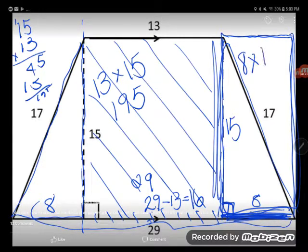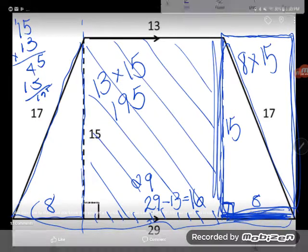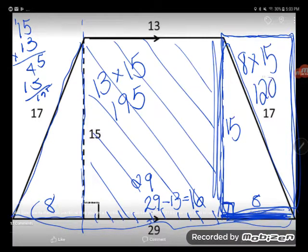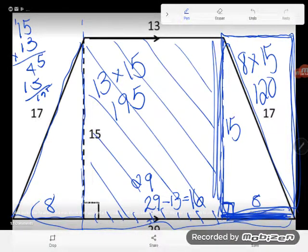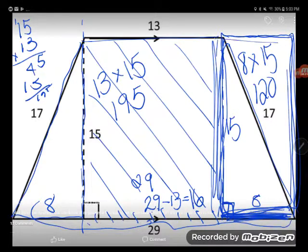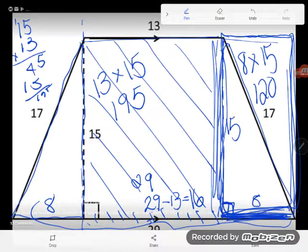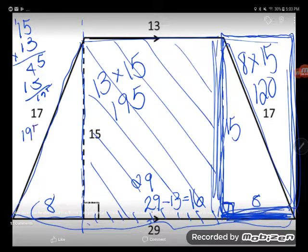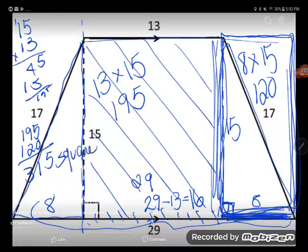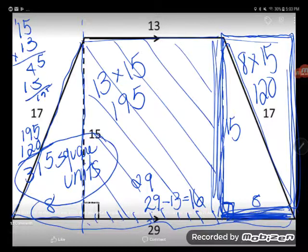Then he put the two rectangles together. If this rectangle is 195 square units and this rectangle is 120 square units, I can total them up by just adding them. So 195 square units and 120 square units for the second rectangle, and we get 315 square units. And hey, we just did area of a trapezoid like a woodworker!